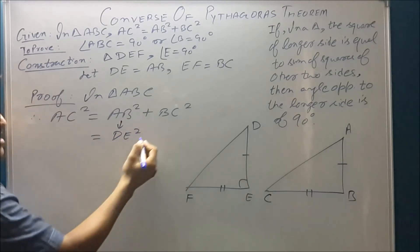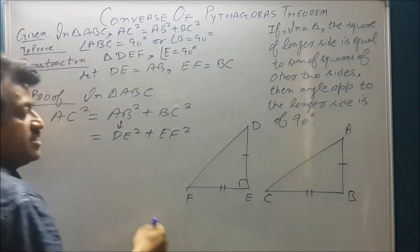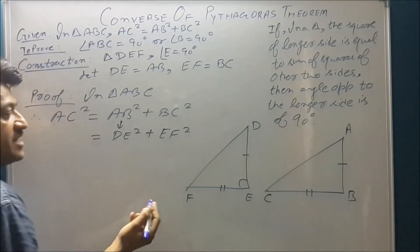It becomes DE square and we convert BC to EF. And in triangle DEF, as we know that angle E is 90 degrees, we can use Pythagoras.